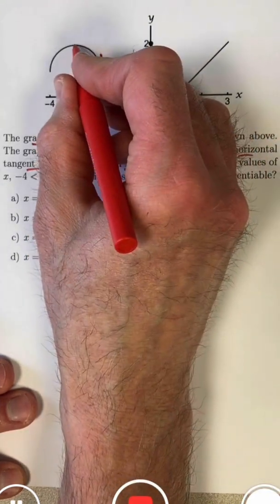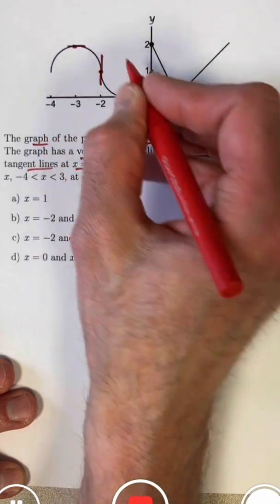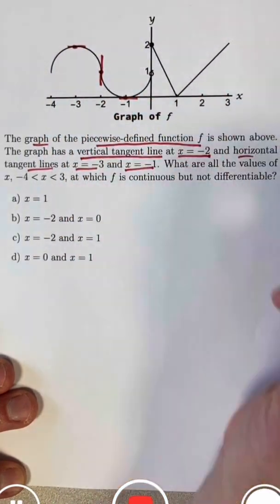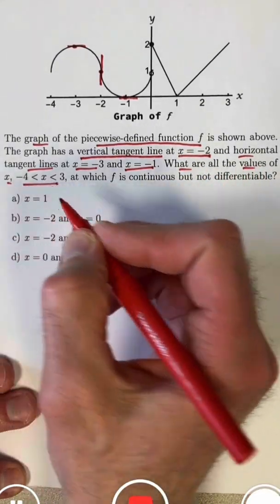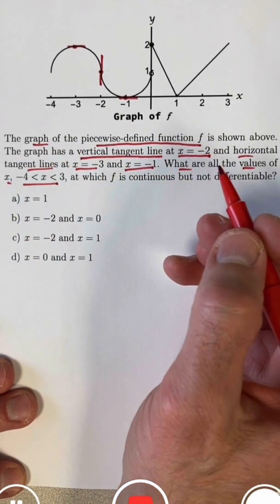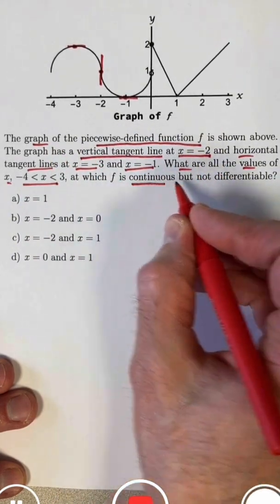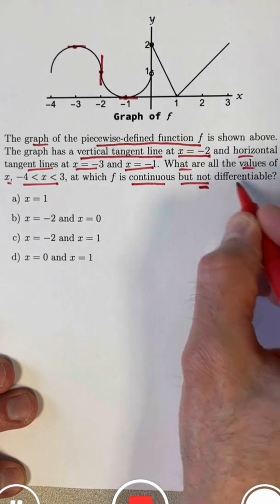Horizontal tangent lines again at x equals negative 3 and x equals negative 1. The question is, what are all the values of x strictly between negative 4 and 3, so we're not looking at the endpoints, at which f is continuous but not differentiable?